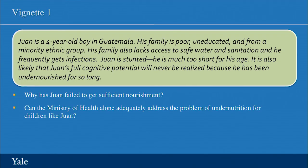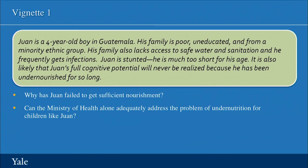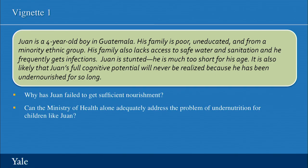Let me begin with three vignettes. Juan is a four-year-old boy in Guatemala. His family is poor, uneducated, and from a minority ethnic group. Juan's family also lacks access to safe water and sanitation, and he frequently gets infections, including lots of bouts of diarrheal disease. Juan is stunted — much too short for his age. It's also likely that his full cognitive potential will never be realized because he's been undernourished for so long. So let's ask: why is Juan so malnourished?